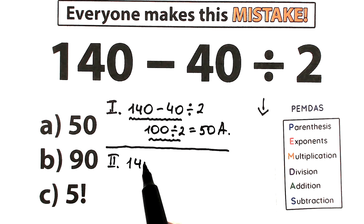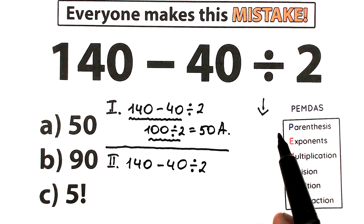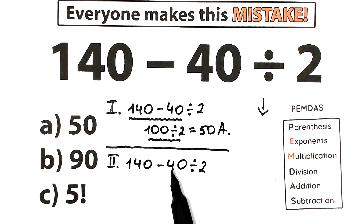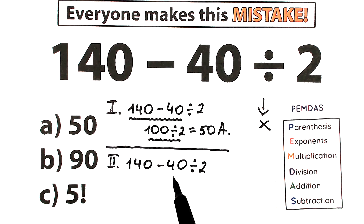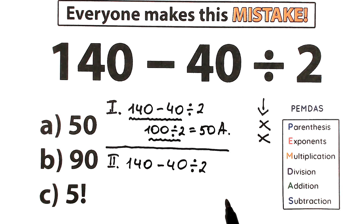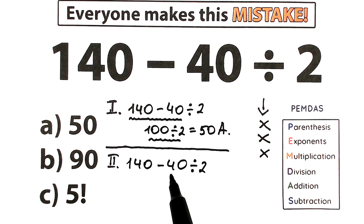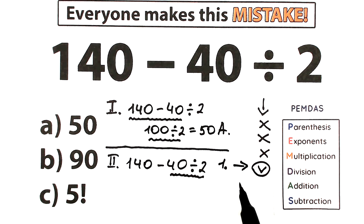Let's rewrite our challenge: 140 minus 40 divided by 2. Let's scan what elements we have. Parentheses — highest priority — I don't see any, so we skip that. Exponents — squares, cubes — none either, so we skip that. Next: multiplication and division. I don't see a multiplication sign, but I do find the division sign. We apply this division only to 40 and 2 — not the whole expression. So our first step is 40 divided by 2.